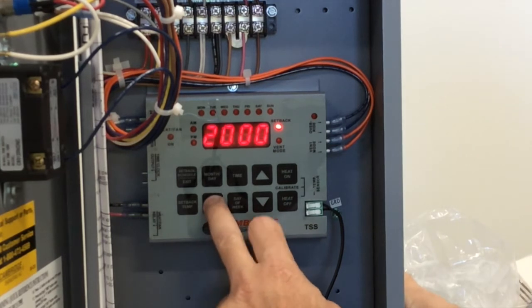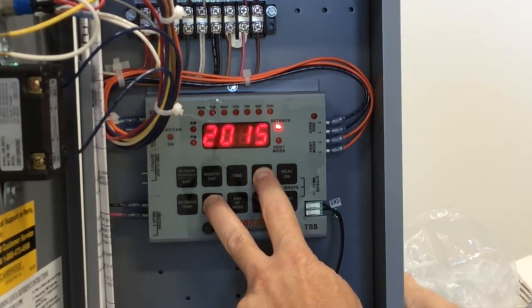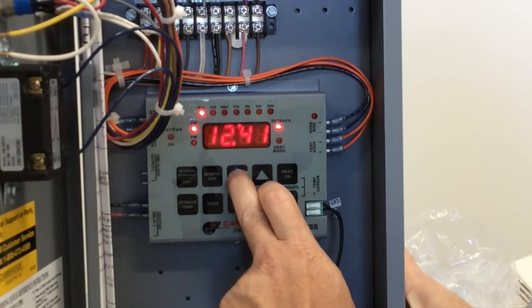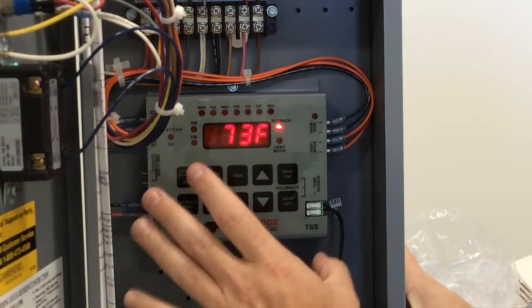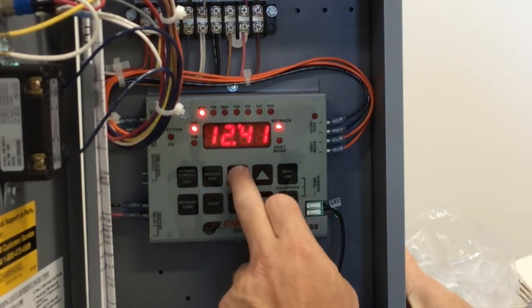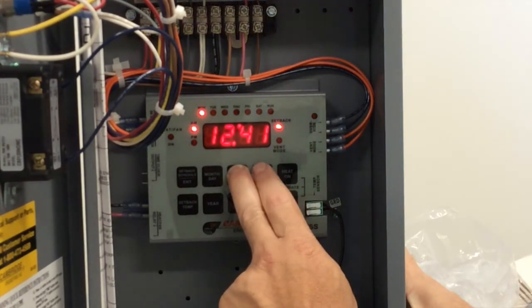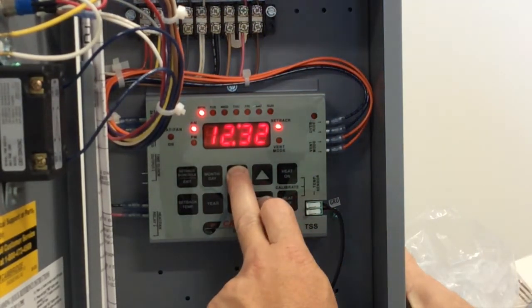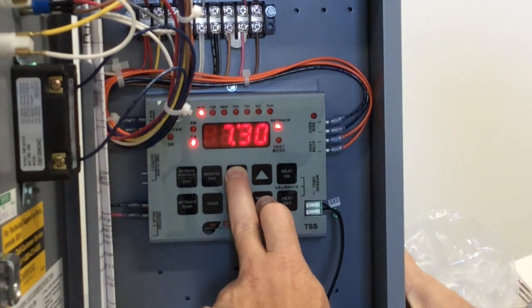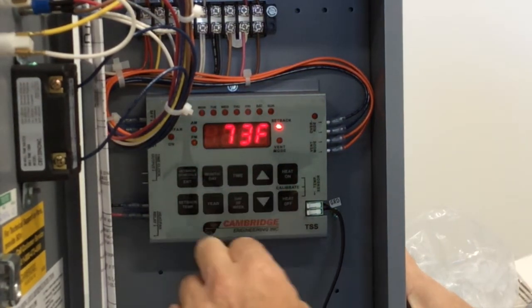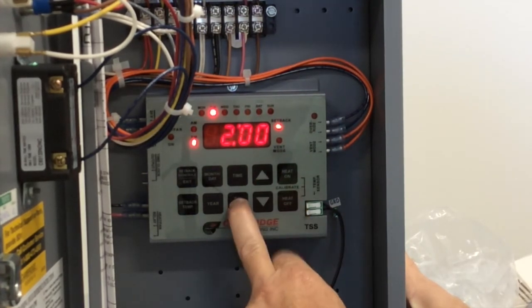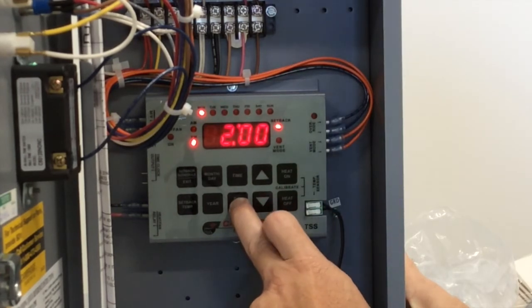Now we're going to go to our year and make that 2016. Next we're going to go to our time and it is 2 p.m. currently. Whenever you first power the thermostat up, it will always be at 12 a.m. As you can see, I plugged this in 41 minutes ago. So we're going to hold this time button in and we're going to go to 2 p.m. Now going down is quicker to get to 2 p.m. than going up in this instance because I haven't got to 2 o'clock yet, so I'm going to scroll down. Okay, so now our time is set. Next we set our day of week. Today is Monday, so we're going to scroll to Monday.